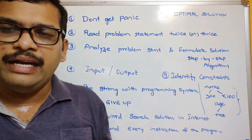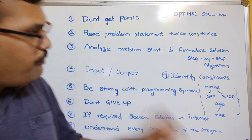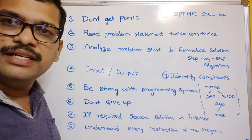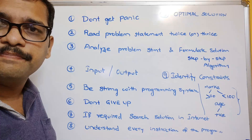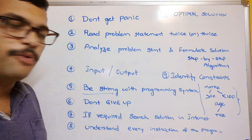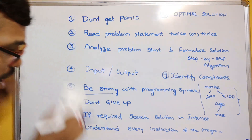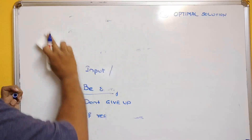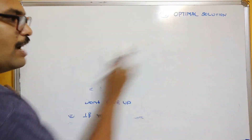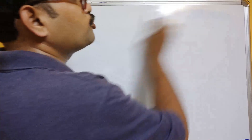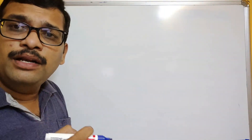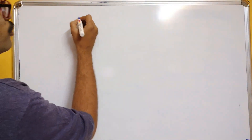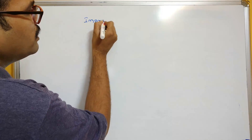So don't simply open your IDE and start writing programs. First formulate the solution, then convert the step-by-step algorithm to code using your programming language. Being strong with programming syntax is the most important thing. That covers how to write programs. Now let's look at how to improve your skills — I will show you sample programs with story narration where the concept will be simple but written in paragraphs.